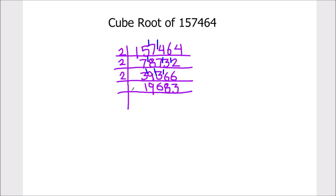Now we got an odd number, so let's divide it by 3. 3 times 6 is 18, 3 times 6 is 18, 3 times 6 is 18 and 3 times 1 is 3.